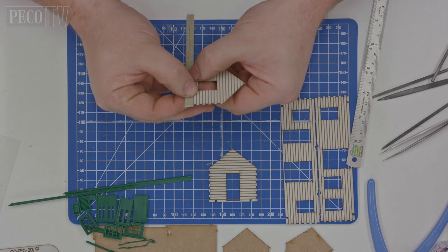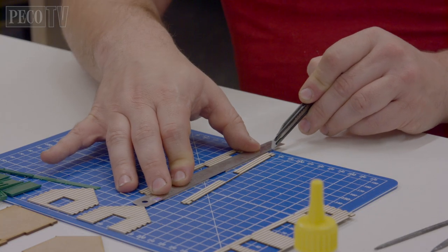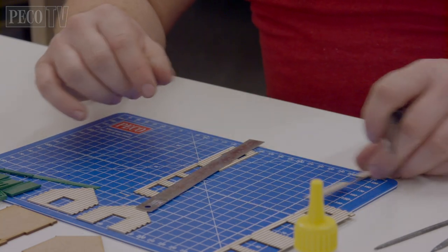Once both items have been cut, check they fit together nicely and again cut the correct length for each of the walls.